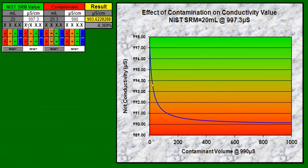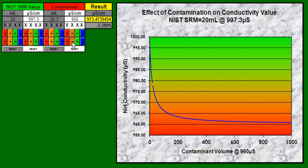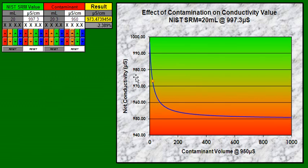What if the contaminant value was not near the SRM value? As that value drops, of course, the y-axis values change to make a more significant impact. And we could see a very, very large drop in the value of the SRM.